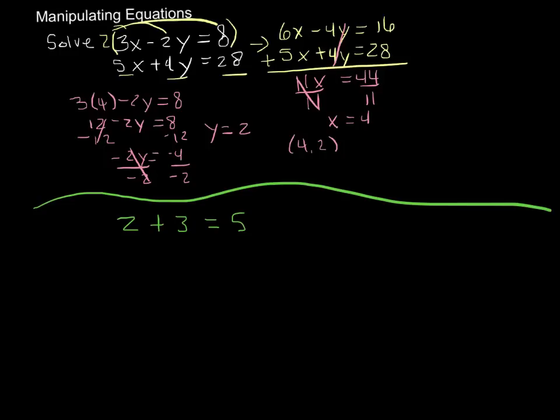I have a true statement here, right? 2 plus 3 equals 5. I want to write another true statement below it. 9 plus 7 equals 16. So those are both true statements. So how can we manipulate either one of these, or both of them, in ways that produce other equations that are true?